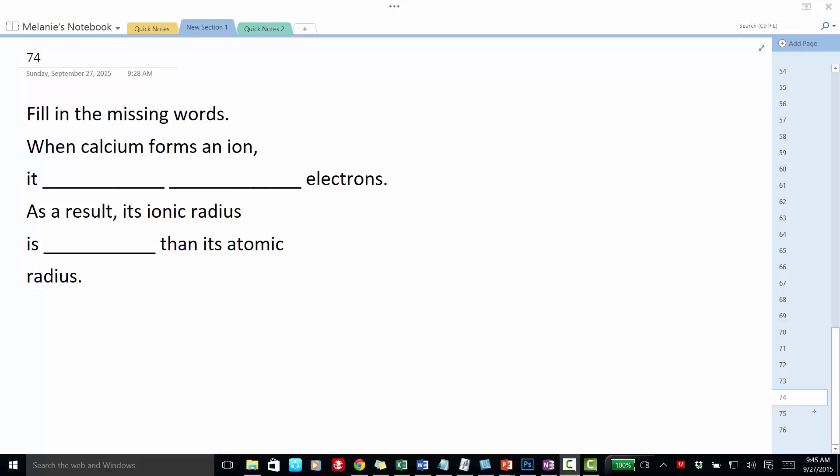This is Melanie Fine of Chem in 10. Today's chemistry question of the day asks us to fill in the missing words. When calcium forms an ion, it blank blank electrons. As a result, its ionic radius is blank compared to its atomic radius.